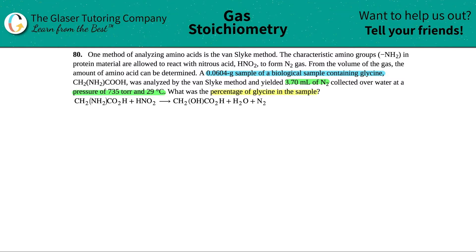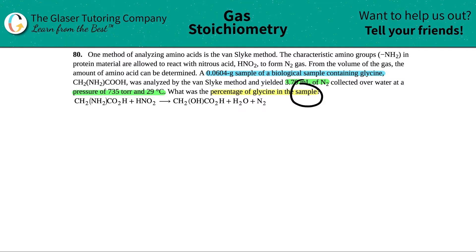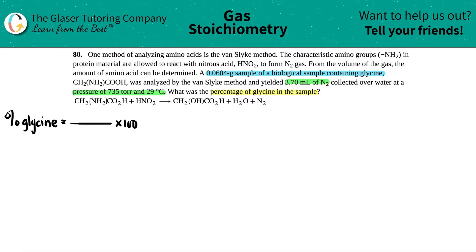So basically, what the question's asking for is the percentage of glycine in the sample. We've done tons of percentage questions — percent is just basically a part divided by a whole times 100. So if we want to find out the percent glycine, it would be equal to something divided by something times 100. The glycine has to be on top, and we want it out of the total sample, so the amount of the sample goes on the bottom.